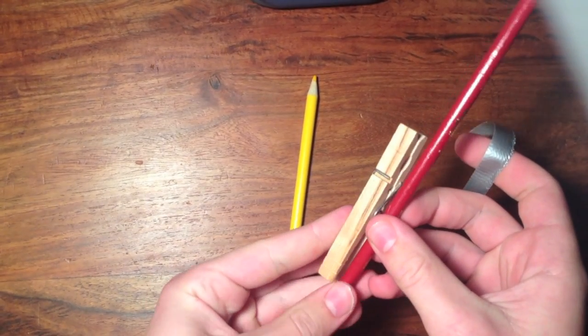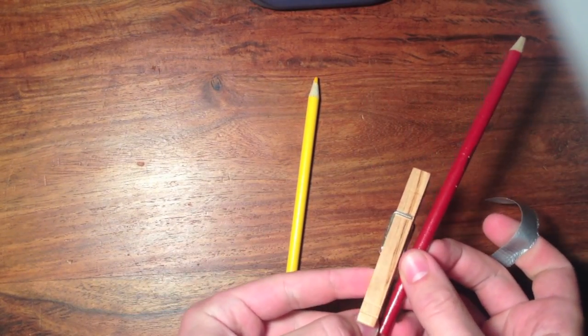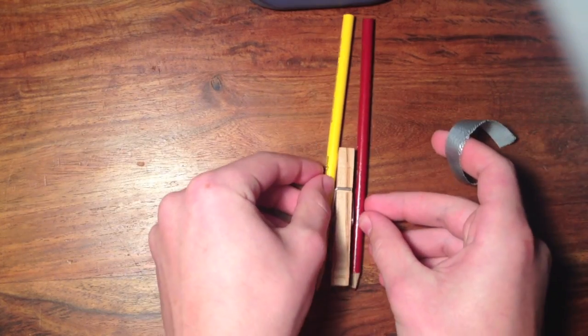Our first step is to take two of your pencils and tape them to either side of the clothespin, like that.